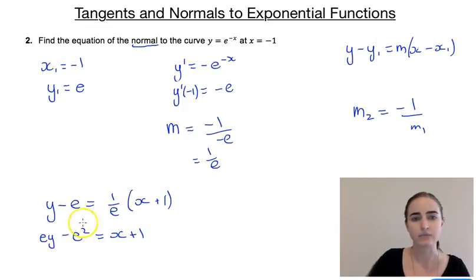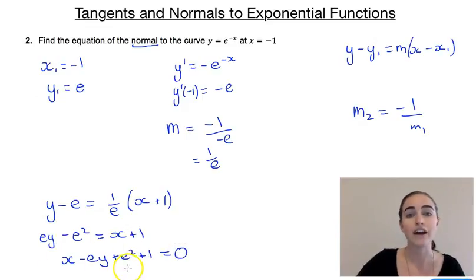Because we can't get it in gradient intercept form, we can't make y the subject without putting fractions back in it, let's just rearrange it into general form. So we'd end up with x minus e, y plus e squared plus 1 equals 0. So that is the equation of our normal.